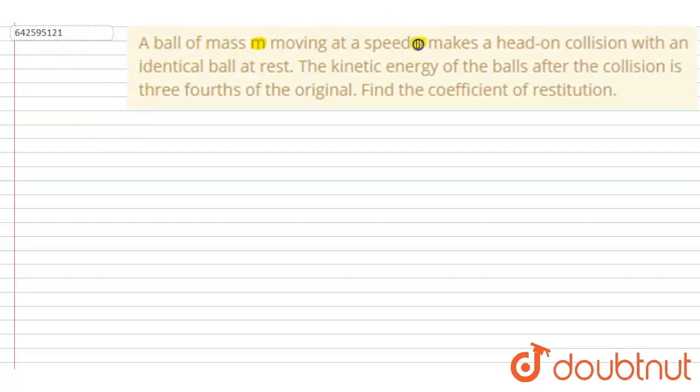A ball of mass m moving with a speed v makes a head-on collision with an identical ball at rest. The kinetic energy of the balls after the collision is three-fourths of the original kinetic energy. Then you have to find out the coefficient of restitution.